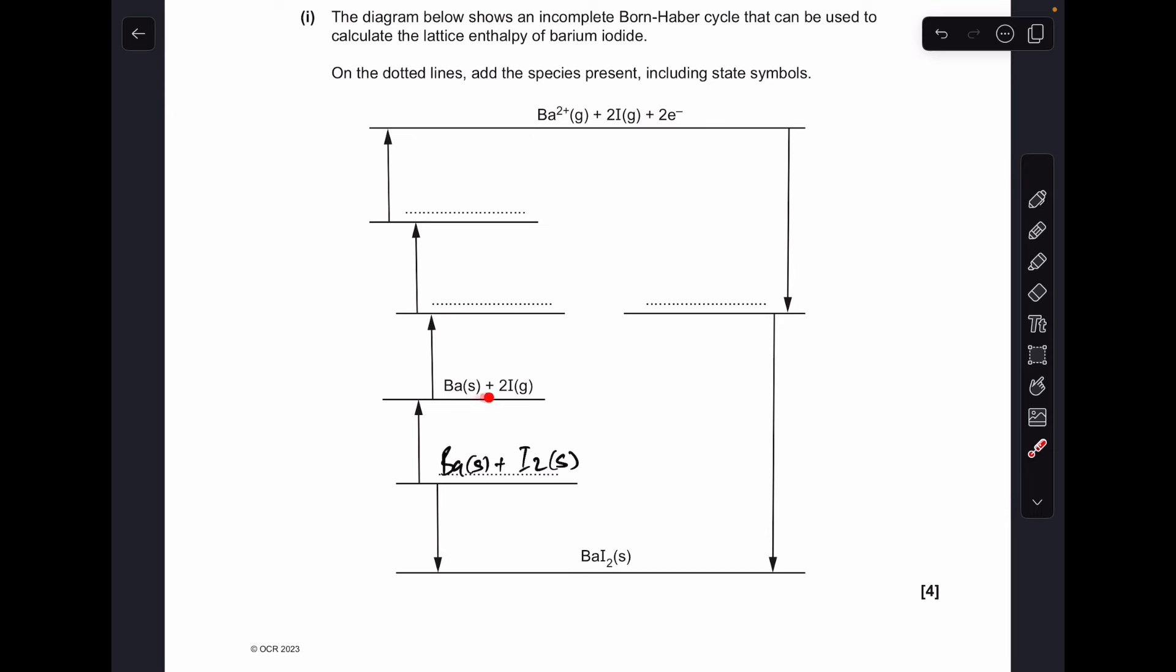They've populated this one, so what have they done here? They've atomized the iodine, turning it from the solid state into gaseous atoms. We need to do the same with the barium, so we need barium gas there, and obviously the 2I stays as it is.